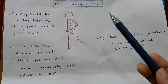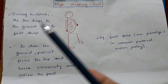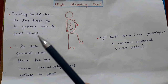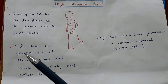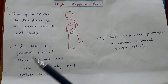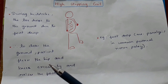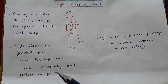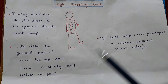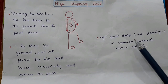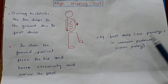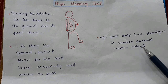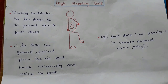In high stepping gait, during heel strike the toe drops to the ground due to foot drop. Therefore, to clear the ground, the patient flexes the hip and knee excessively and raises the foot. This is seen, for example, in foot drop due to muscle paralysis in common peroneal nerve palsy.